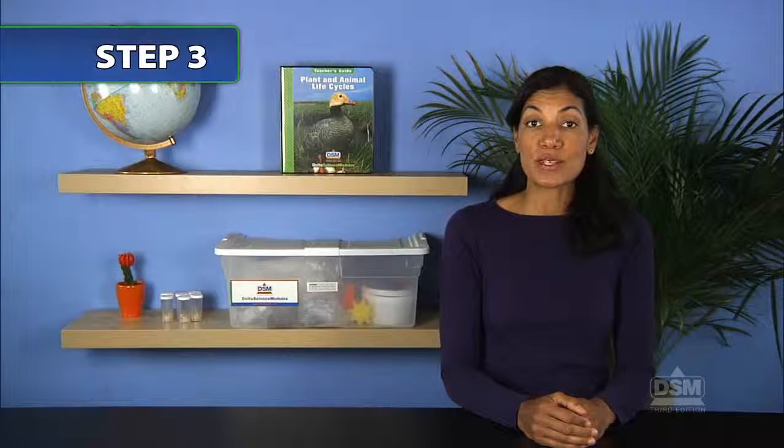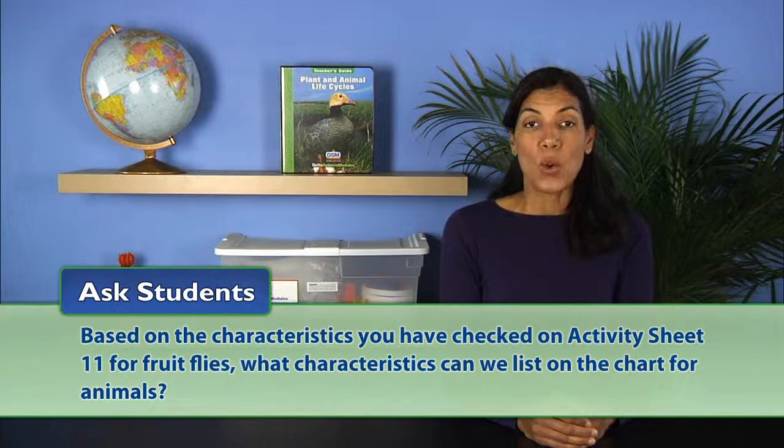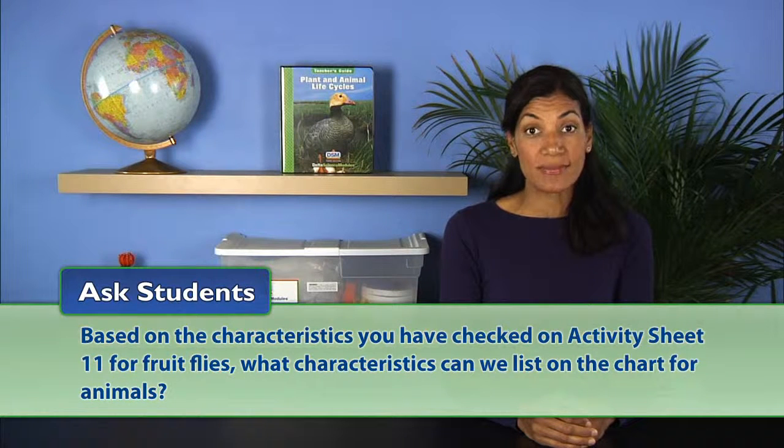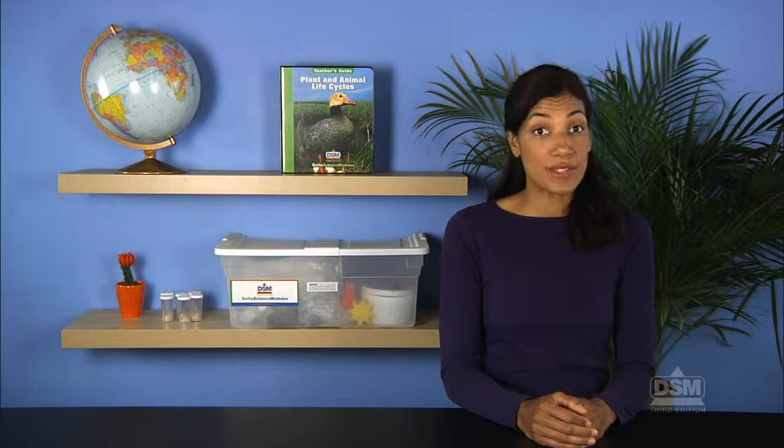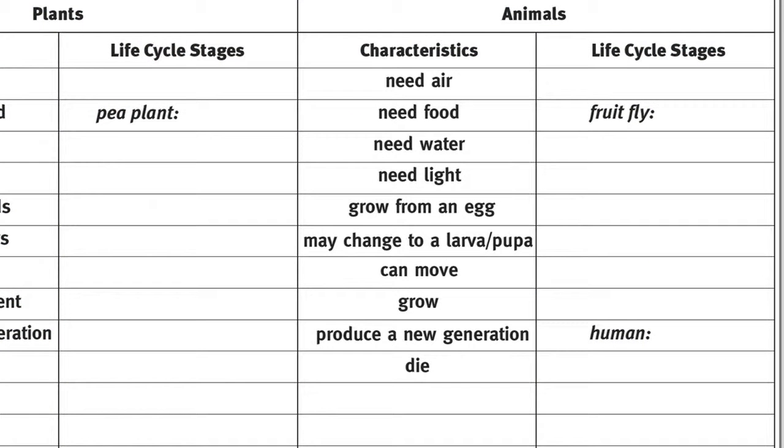Ask students, based on the characteristics you have checked on Activity Sheet 11 for fruit flies, what characteristics can we list on the chart for animals? Point out to students that not all animals go through metamorphosis. Therefore, the chart entry should read, may change to a larva, pupa. Again, record all correct responses on the chart.